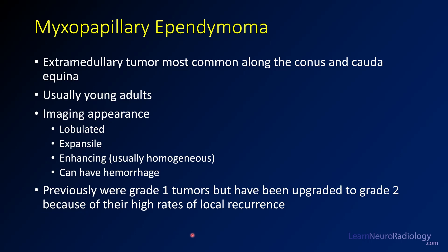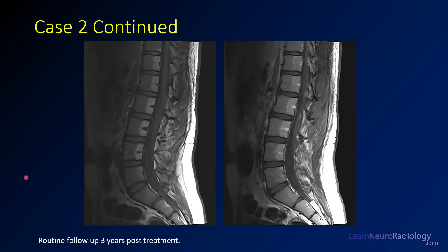These were previously called grade one tumors, but in the most recent WHO classification they've been upgraded to grade two because of high rates of local recurrence. On routine follow-up about three years later, the pre-contrast and post-contrast T1 images show fat deposition in areas covered by radiation — confirming prior radiation therapy. On post-contrast, you see nodular enhancement along the nerve roots of the cauda equina: areas of tumor recurrence. Even though myxopapillary ependymomas are relatively indolent, they're really prone to local recurrence.